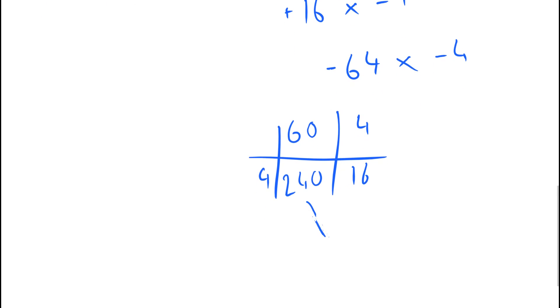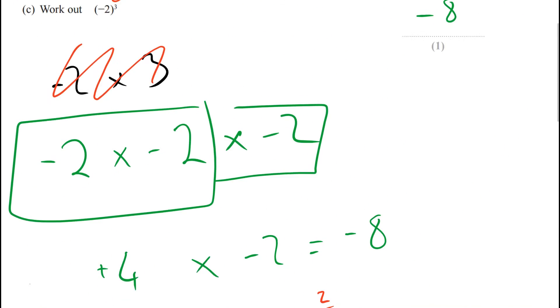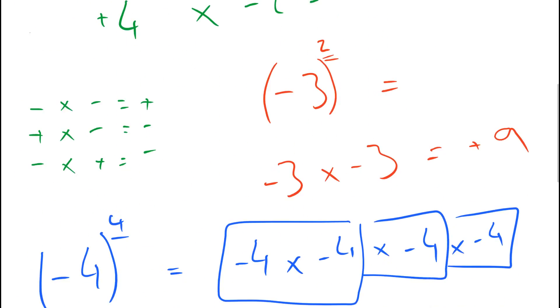Adding these two answers together you get 256. And finally a minus times a minus is a plus. So the final answer is positive 256. Minus 4 to the power of 4.